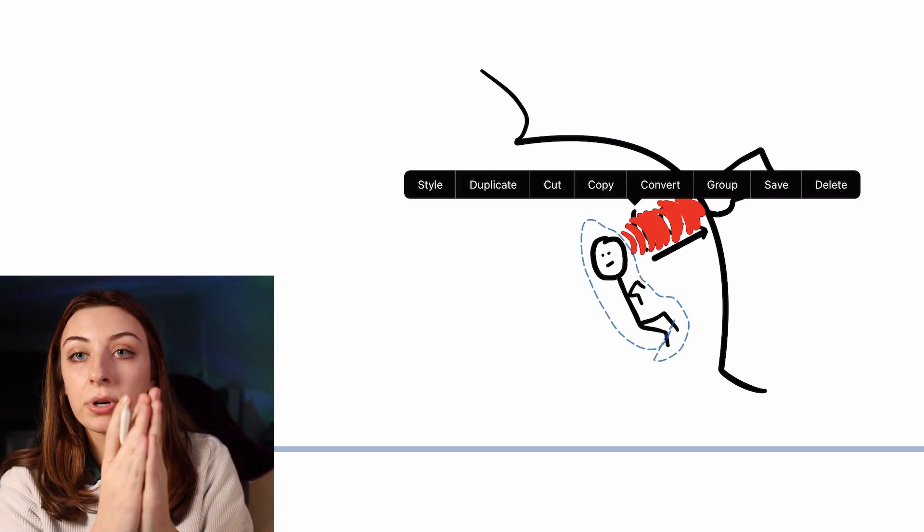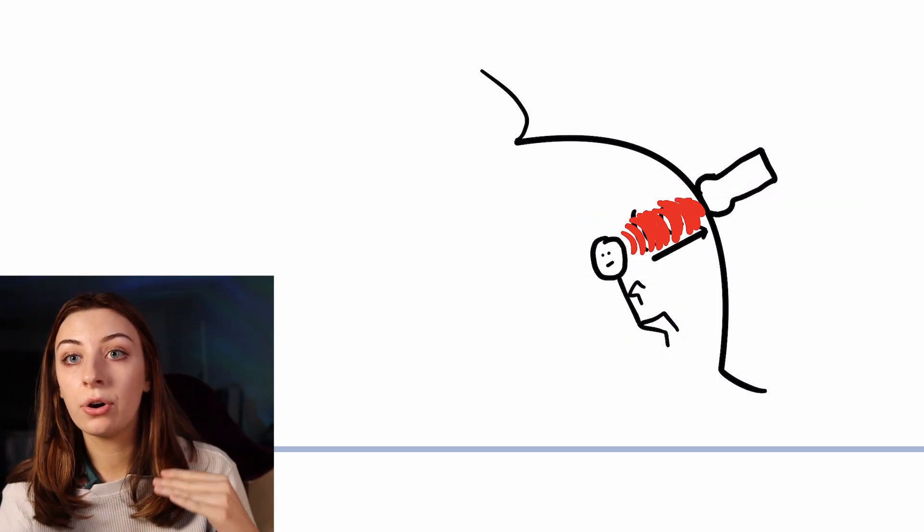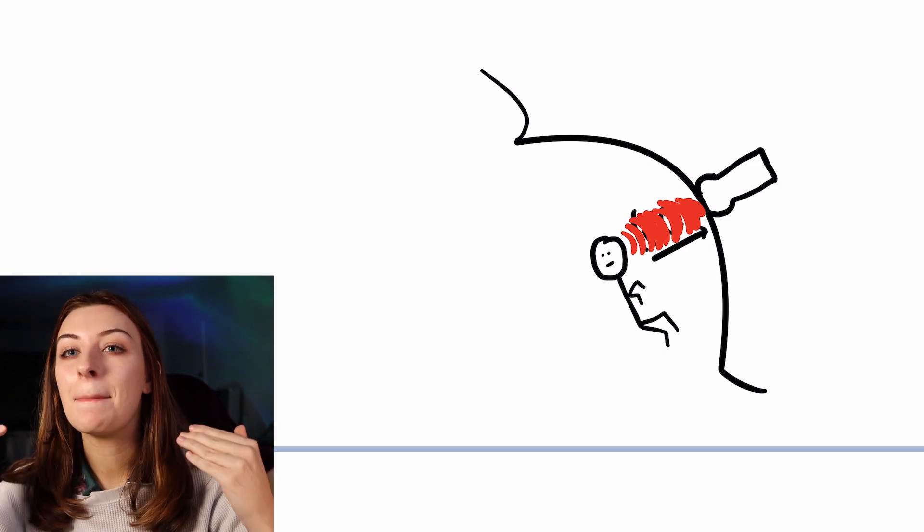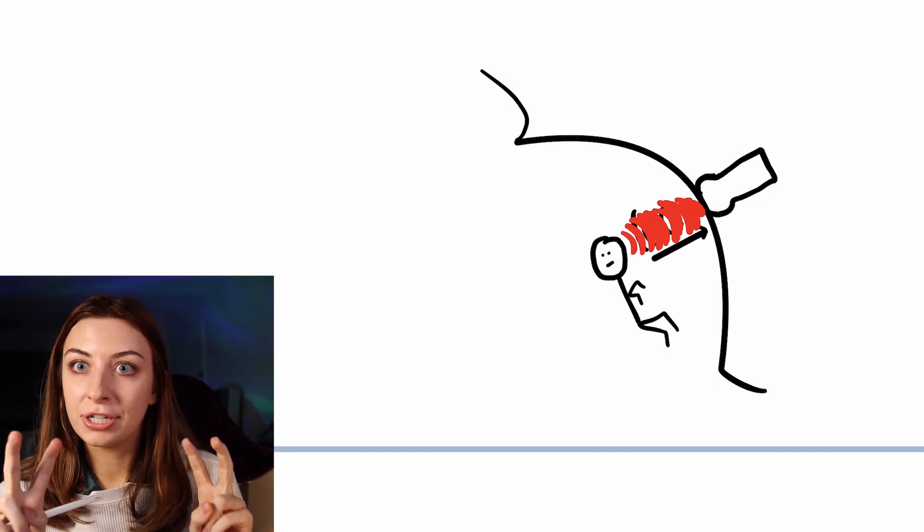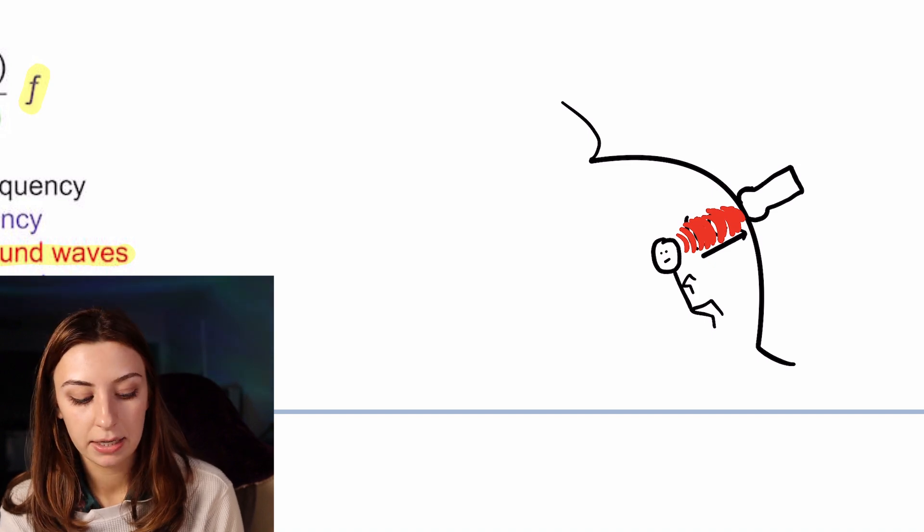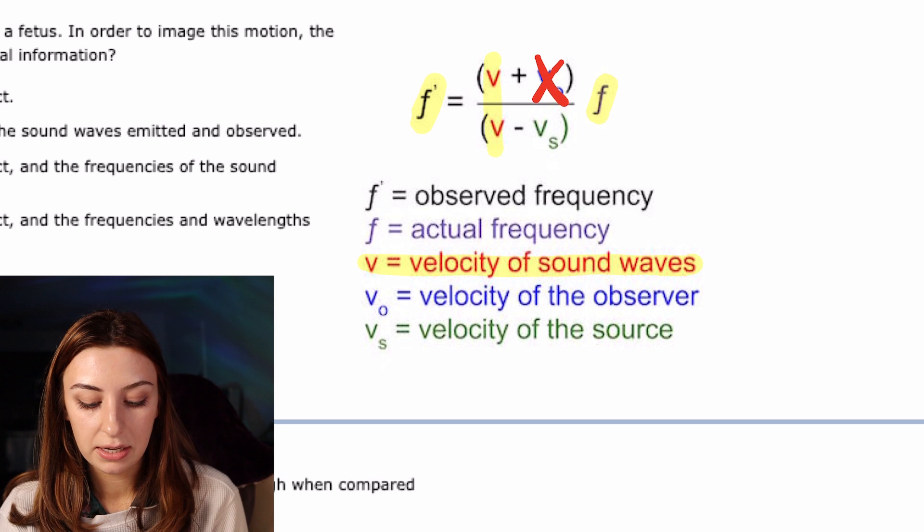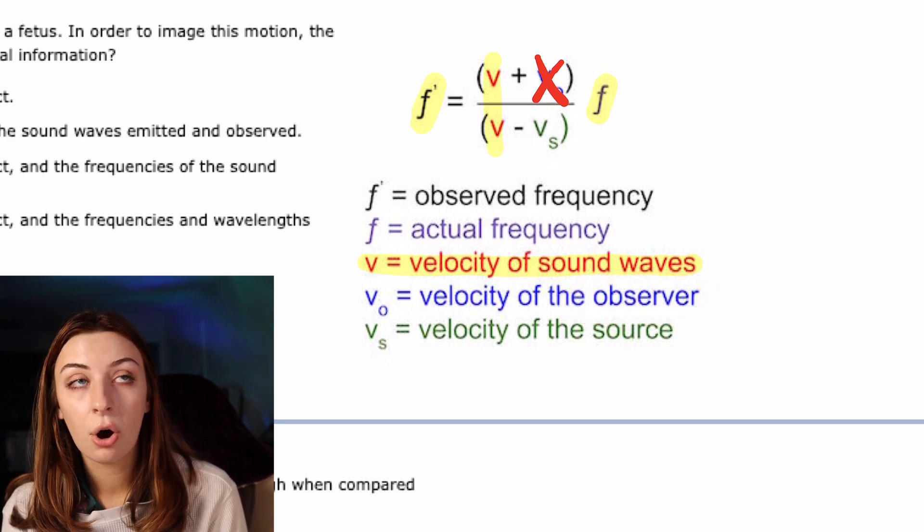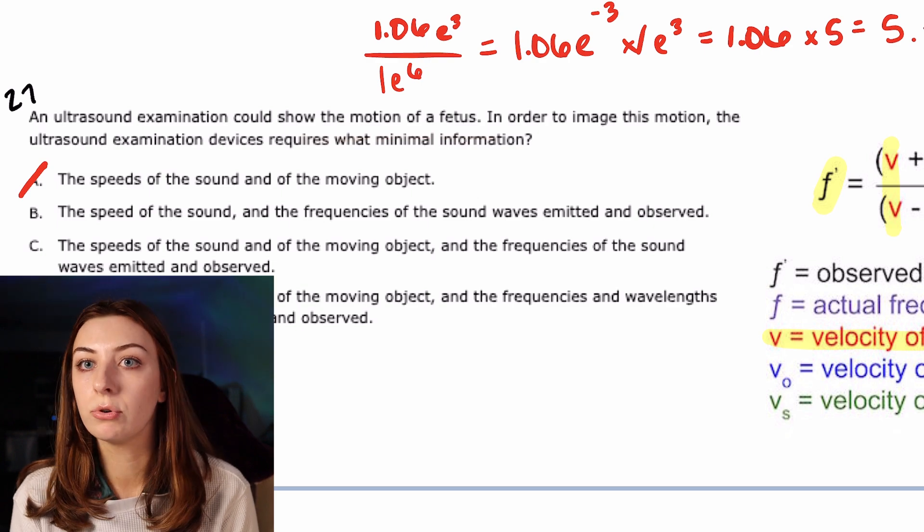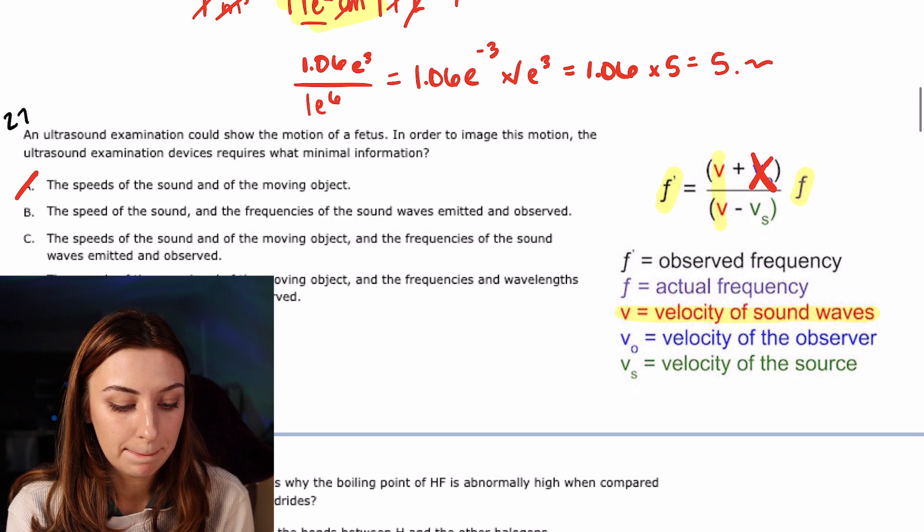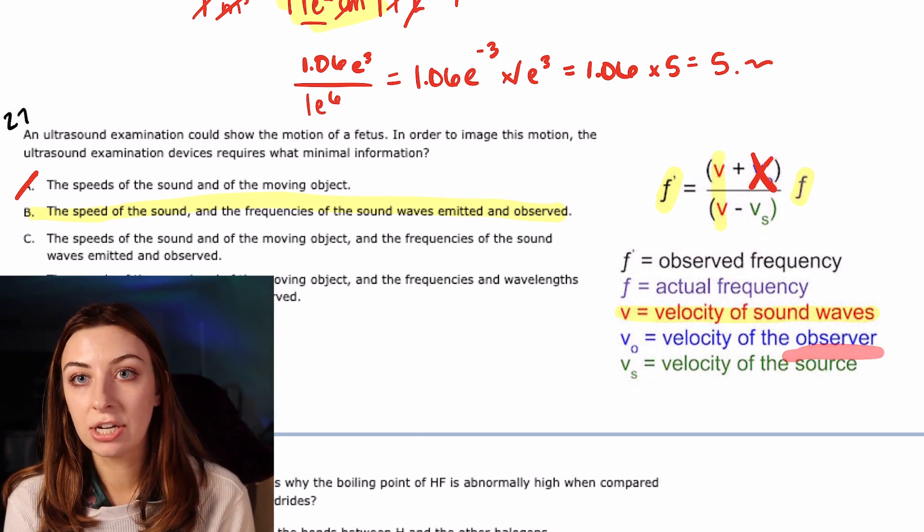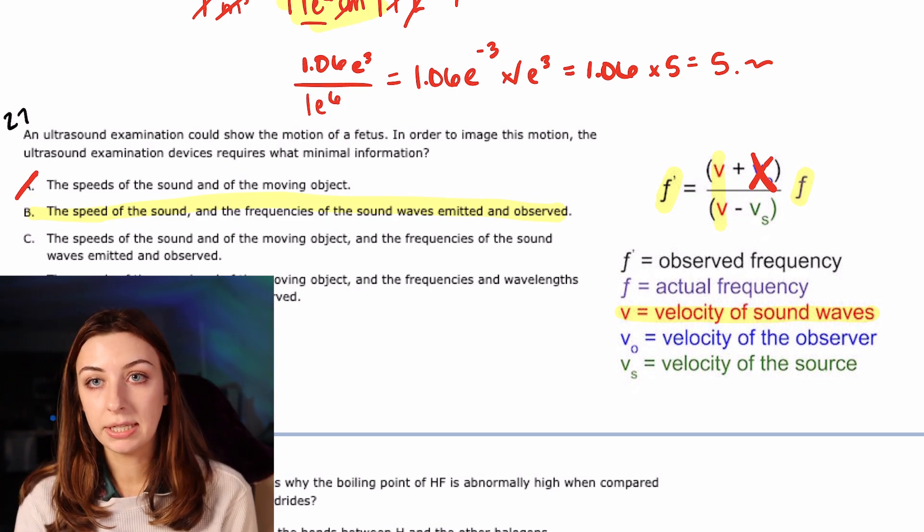So for an ultrasound, we can essentially mark out the velocity of the observer, because the observer is the probe and the probe does not move. All that we care about is the velocity of the source, which is the baby. That is all that we are trying to do is figure out the motion of the fetus or the velocity of the baby. So now with the information that is given in B, that is enough to figure out this equation, because you can essentially say that the observer, which is the probe is not moving, because it's just sitting there on the stomach. And so it can be completely taken out of this equation. Okay, so my camera just turned off because it doesn't record past a certain time. And so that's my cue that this video is getting too long. So I'm going to stop right there.